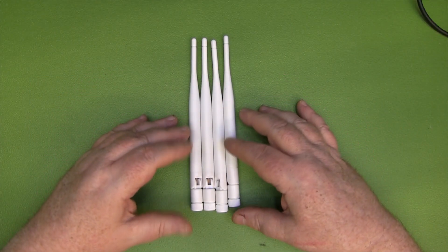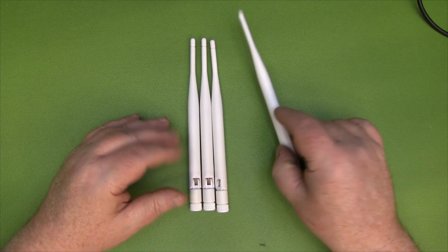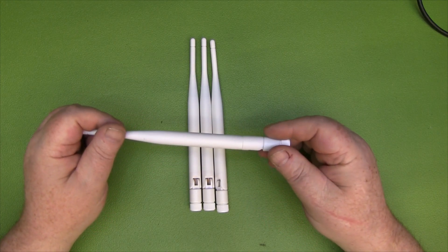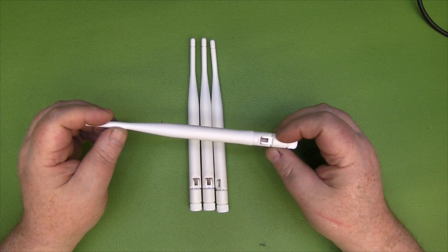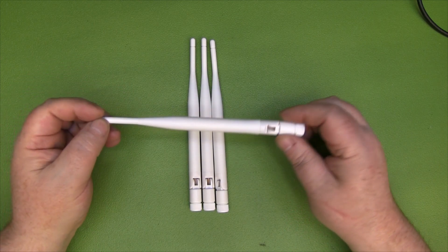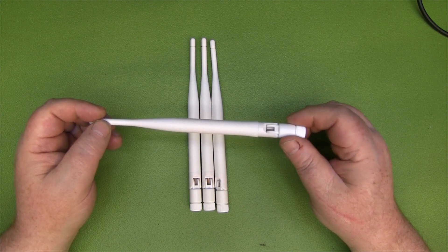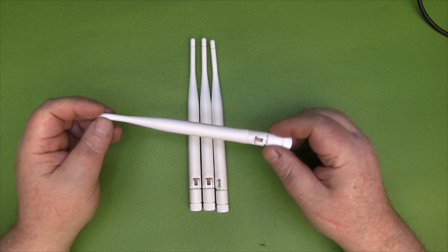Now just a quick little video taking a look at these 5dB 2.4 gigahertz antennas that I picked up recently. Omnidirectional - you've seen these on this channel before, one of the most common antennas on the planet.